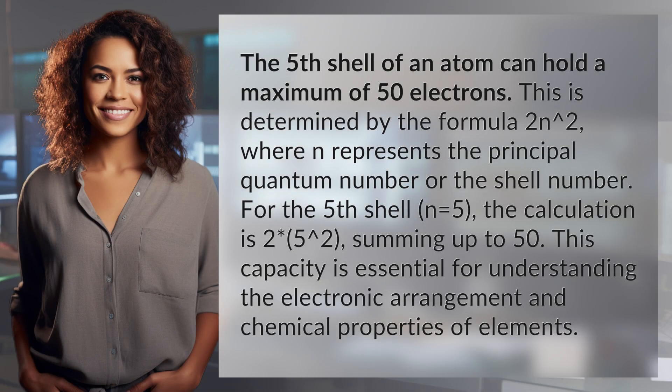The fifth shell of an atom can hold a maximum of 50 electrons. This is determined by the formula 2n², where n represents the principal quantum number or the shell number.